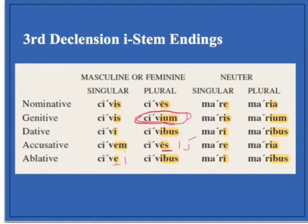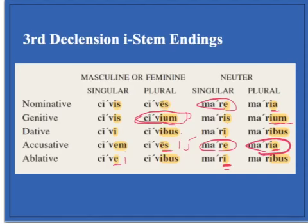For the neuters, you only know one neuter I-stem, and that's mare. Mare goes: mare, maris, mari. Because of the neuter law, the nominative and the accusative are the exact same. The ablative singular is always an I — so that's another change. Then it goes maria, so IA, then IUM, then IBUS, and IA again because of the neuter law. Nominative and accusative are always the same. And then maribus.